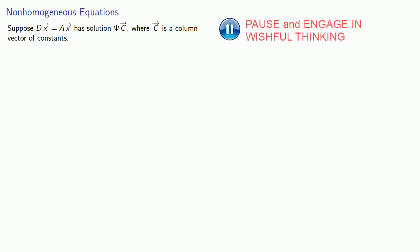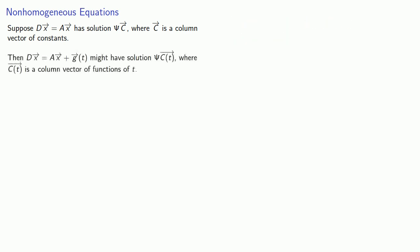Now we can talk about non-homogeneous equations. Suppose dx equals ax has solution Cc, where C is a column vector of constants. Then dx equals ax plus g of t might have a solution Cc of t, where C of t is a column vector of functions of t.